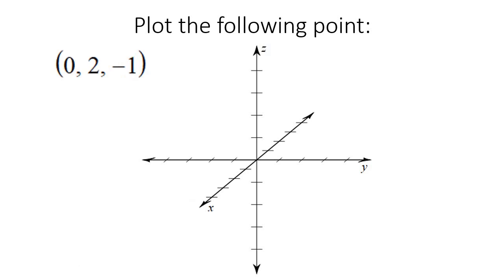Here's the next one. We don't move on the X axis because that's zero, so we stay there. Then we go two on the Y — one, two. And then we go one down on Z. So we are probably somewhere over there.